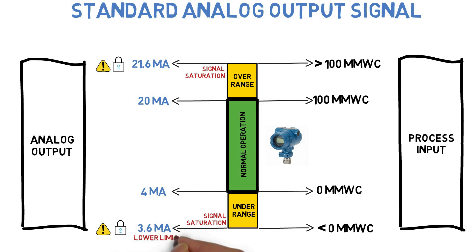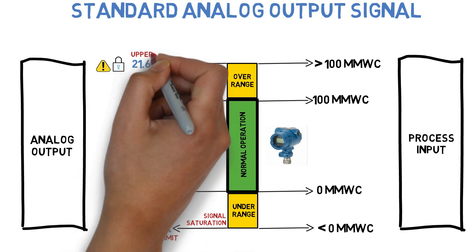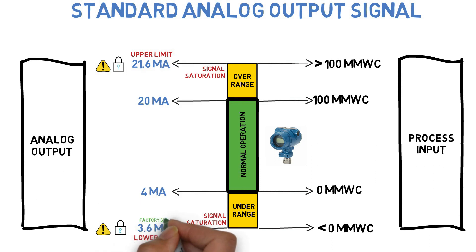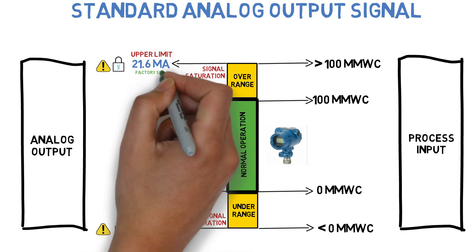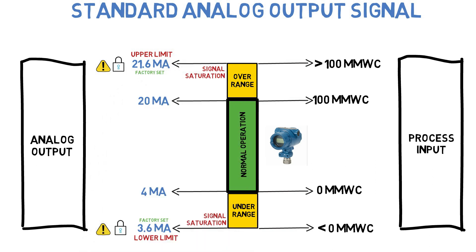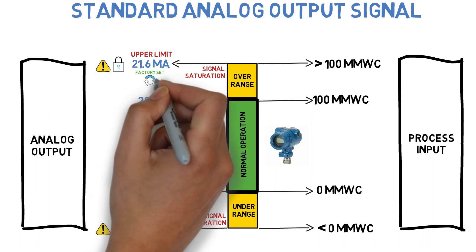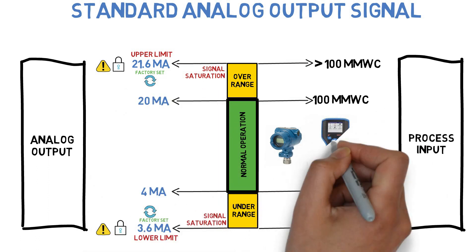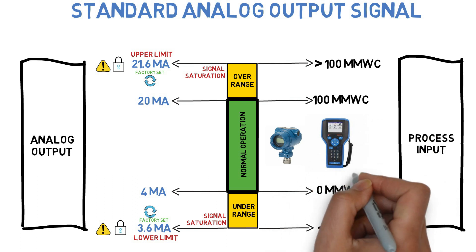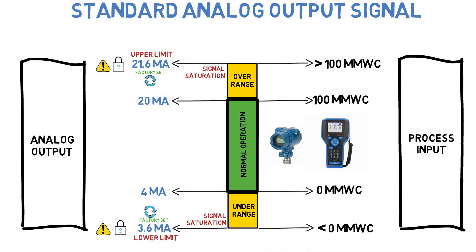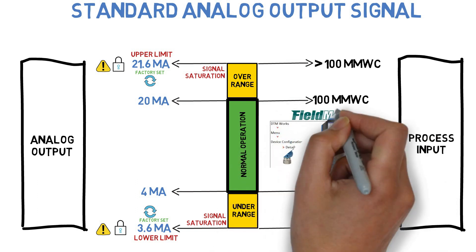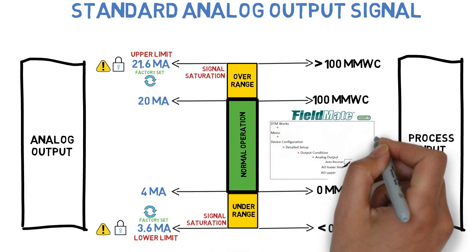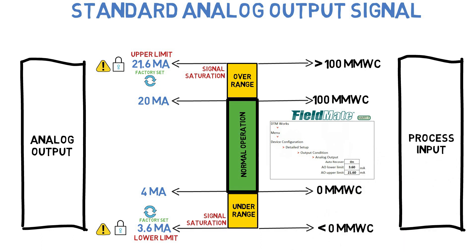The analog output lower limit and upper limit are factory set. These limits are user-selectable within the parameter limits of the transmitter via the HART communicator. This function is available in HART 5 or HART 7.